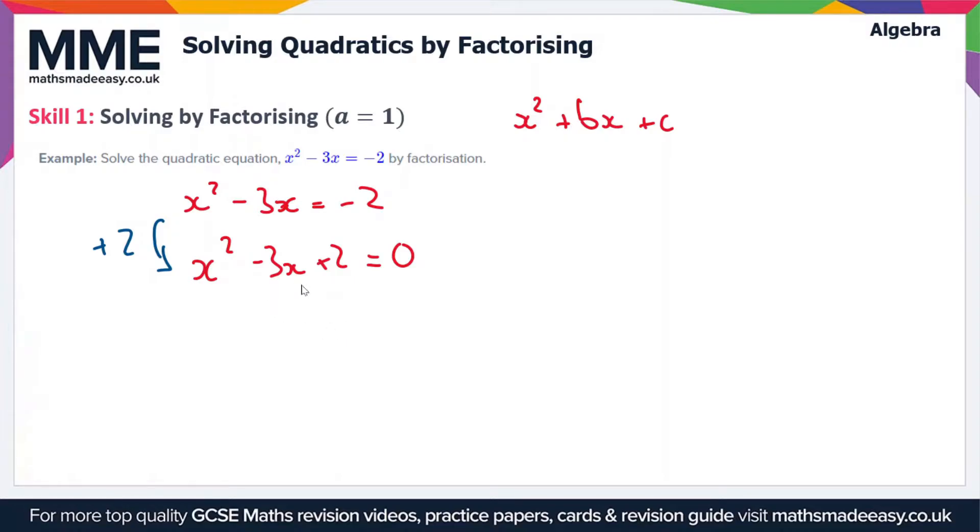To factorise it, if you've not seen our video on factorising, I recommend you watch that first. But here we're looking for two numbers which multiply to give plus 2 and add together to give minus 3. Those numbers are minus 2 and minus 1. So x minus 1, x minus 2 equals 0.